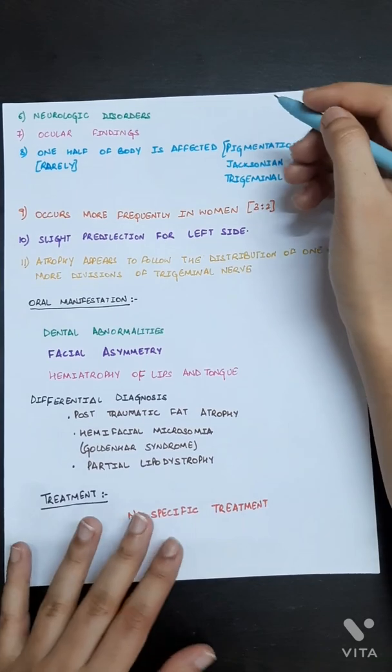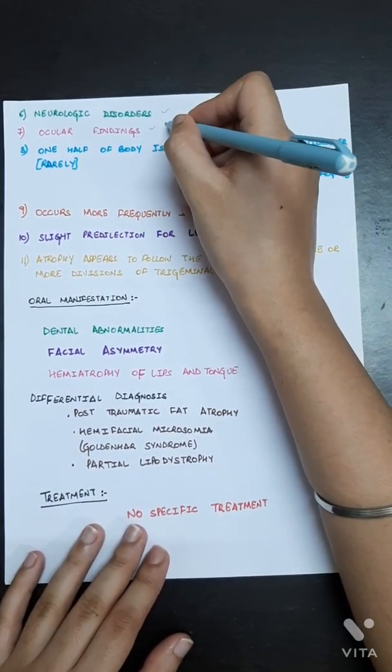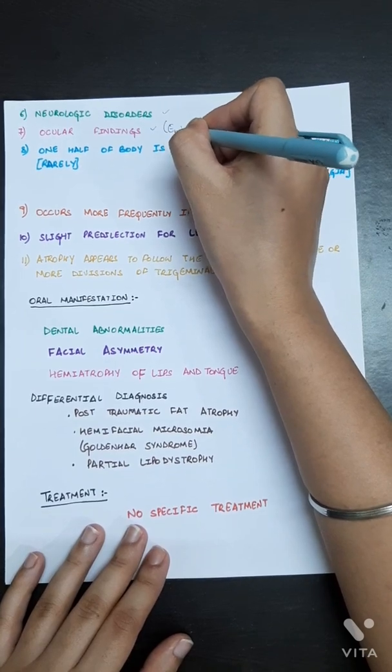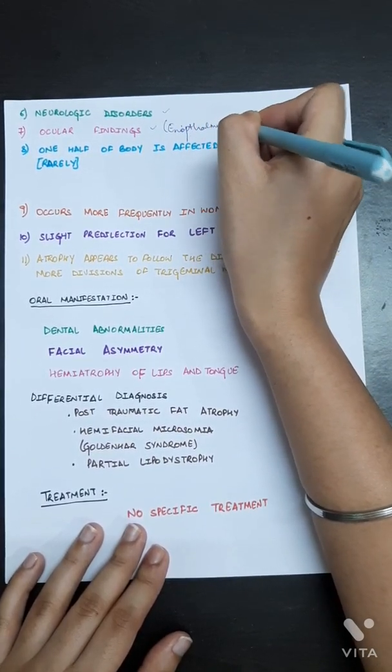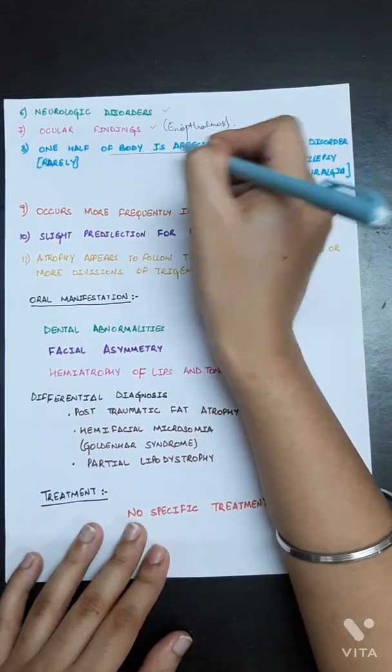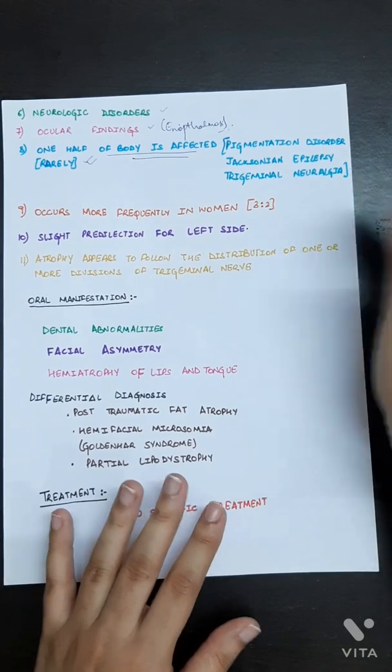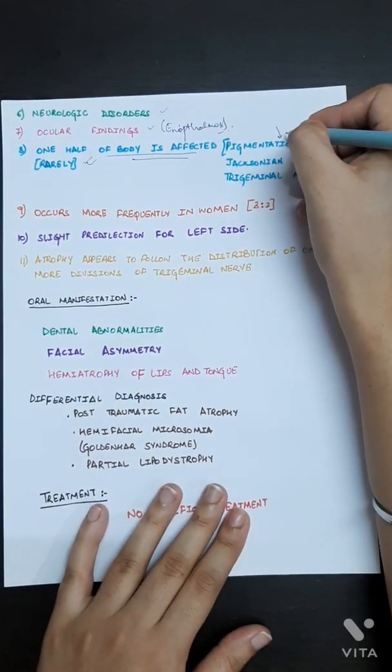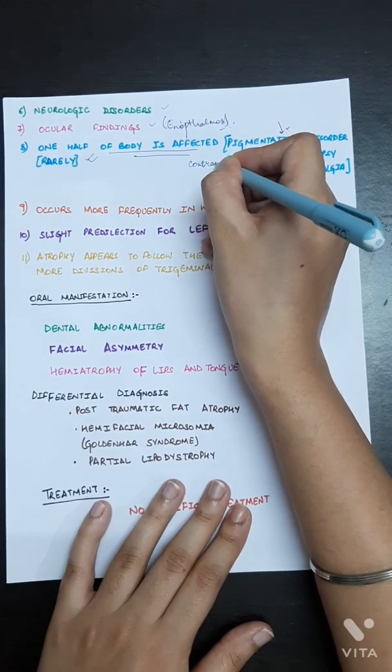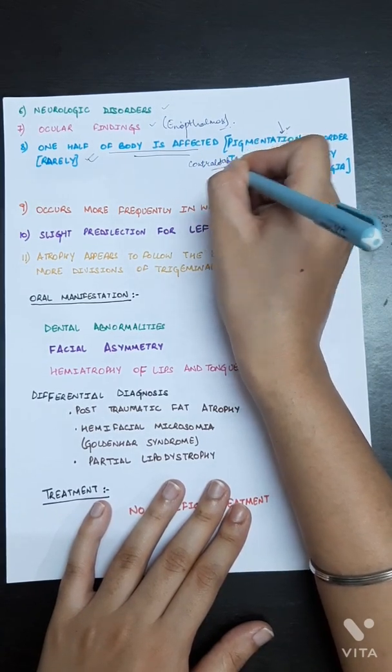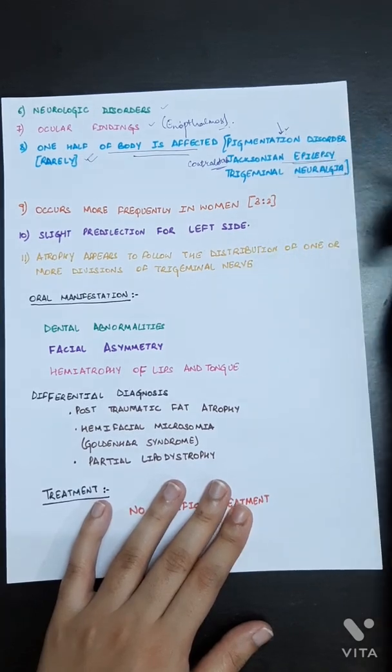Now neurological disorders were found in facial hemiatrophy. Ocular findings such as enophthalmos was seen. One half of the body is affected rarely. Pigmentation disorders were seen. Contralateral means of the opposite side. Trigeminal neuralgia and Jacksonian epilepsy were seen.